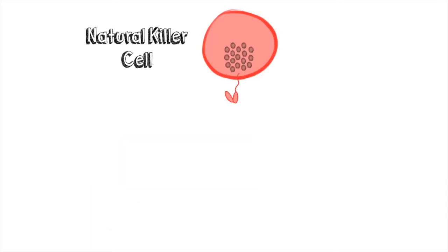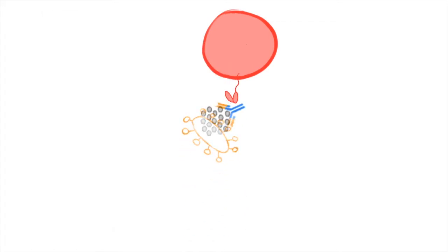Natural killer cells bind to antibodies and secrete chemicals that cause the target to lyse. These are just two of the many ways which antibodies can be used by the immune system to remove invaders from circulation.